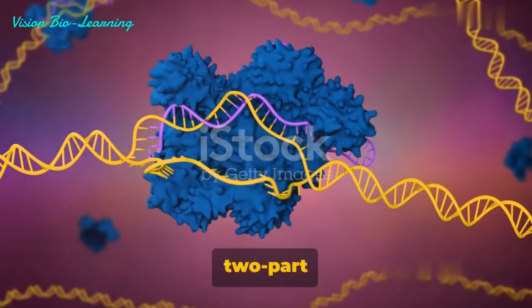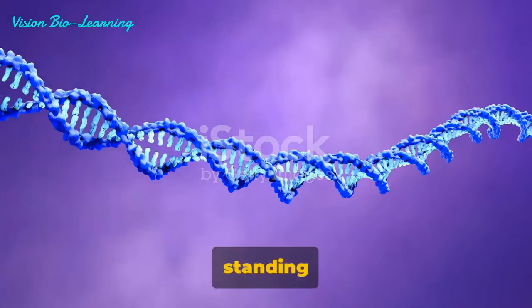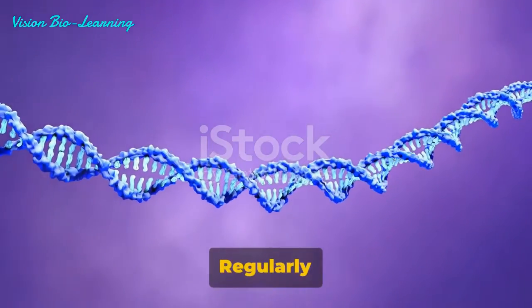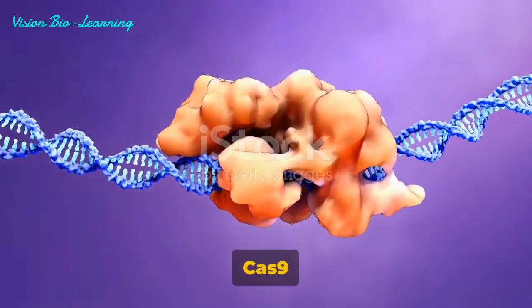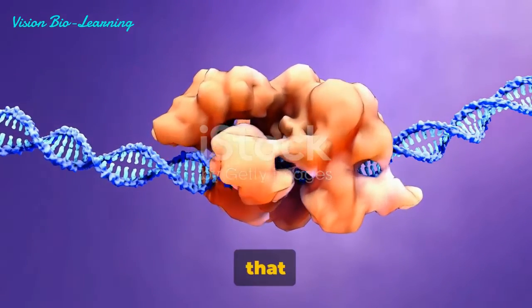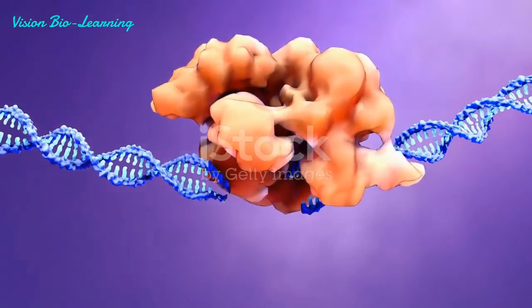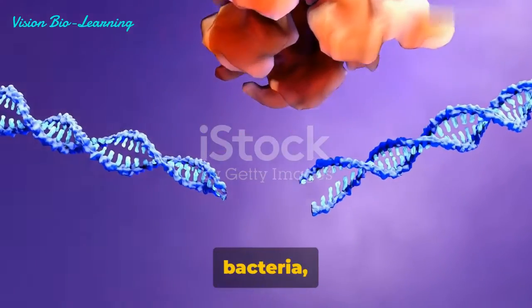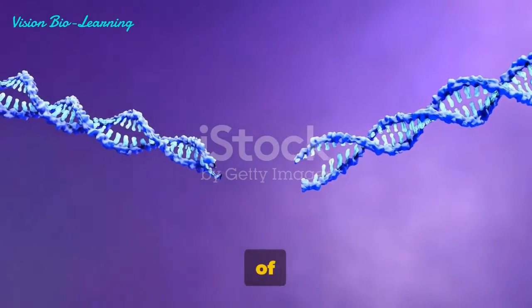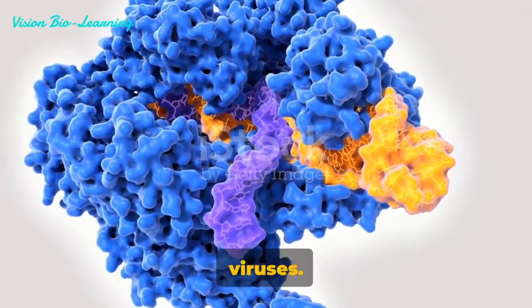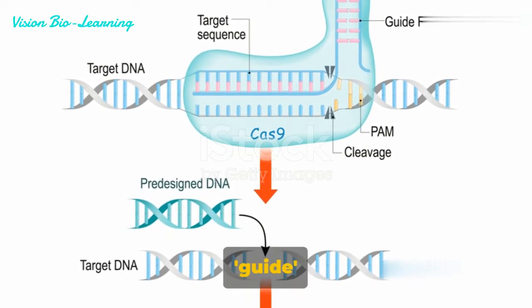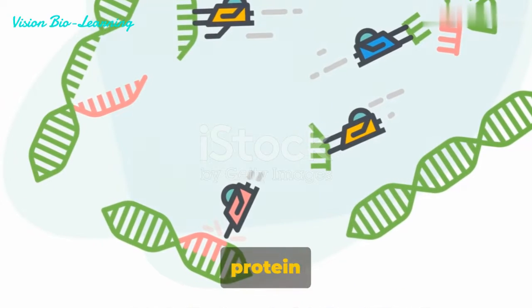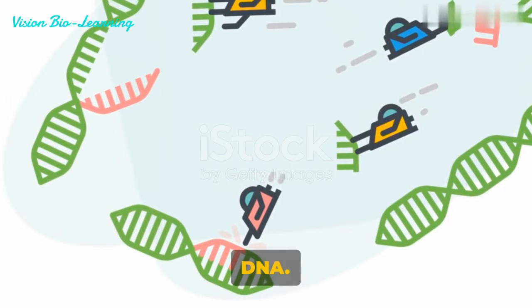CRISPR-Cas9 is a two-part system, with CRISPR standing for Clustered Regularly Interspaced Short Palindromic Repeats and Cas9 being the name of the protein that does the actual cutting. This system is borrowed from bacteria, which use it as a kind of immune system to fight off viruses. CRISPR sequences are essentially the guide that leads the Cas9 protein to the right spot in the DNA.